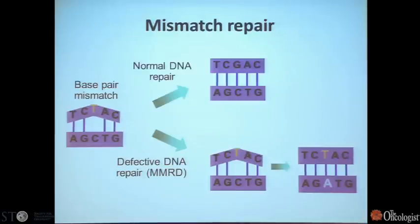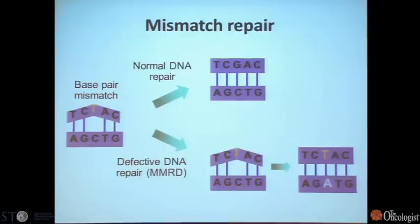I'm going to start by talking about mismatch repair, because it's important for genetics and potentially for adjuvant therapy decision making. The process of mismatch repair involves a number of enzymes, but basically, if you have a base pair mismatch, with normal DNA repair that mismatched base should be excised and replaced with the correct base. If that does not occur, the opposite base is replaced with the incorrect base and that is propagated, resulting in many mutations throughout the genome.